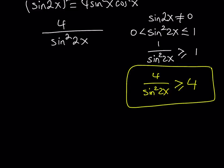It is greater or equal to 4. But what happens if sine x is equal to 0? Then our expression is going to be undefined. Of course in order for this to equal 4, sine squared 2x needs to equal 1.